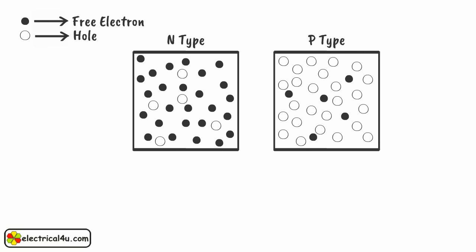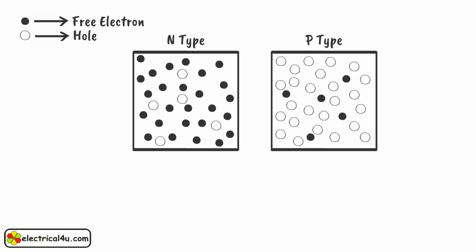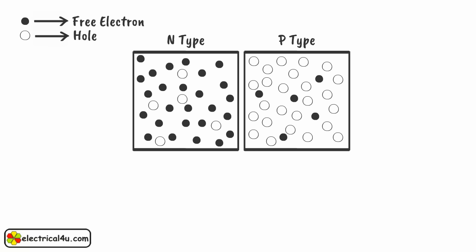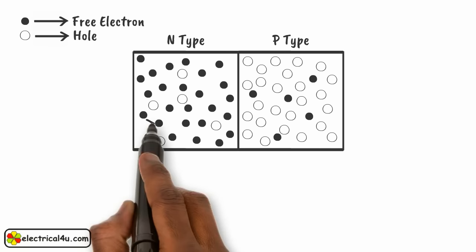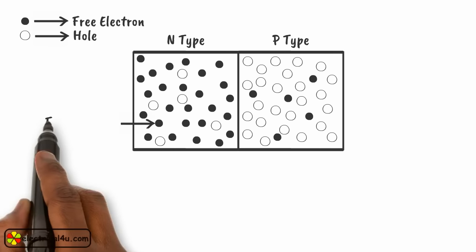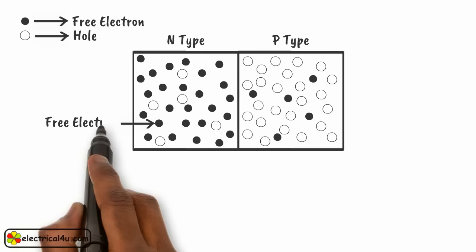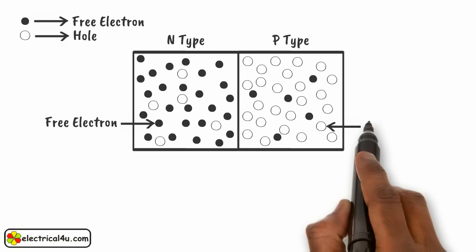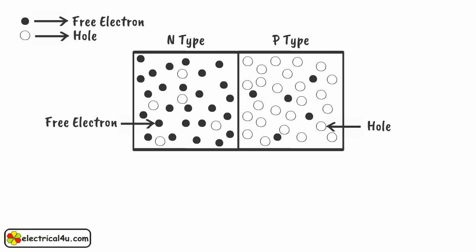Let us create a simple P-N junction diode by joining an N-type and a P-type material together. The majority carriers in N-type material are free electrons, and the majority carriers in P-type material are holes. Let us see what happens at the junction of these two materials.